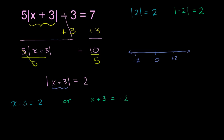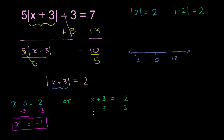So let's solve these. For x plus 3 equals 2, we subtract 3 from both sides. The 3's cancel out, leaving x equal to 2 minus 3, which is negative 1. That's one solution. For the other case, x plus 3 equals negative 2 — we again subtract 3 from both sides. The left side becomes x, and the right side gives negative 2 minus 3, which is negative 5. So x equals negative 5 is our other solution.